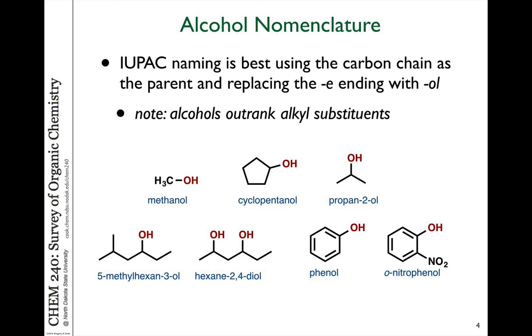According to the official IUPAC naming rules, the alcohol group is considered a part of the parent molecule. And so what we do is we replace the E ending of the alkane with OL indicating that there's an alcohol group attached there, such as methanol. So notice OL is part of the name, the E is dropped. Cyclopentane becomes cyclopentanol.